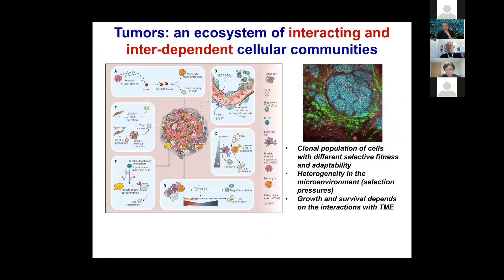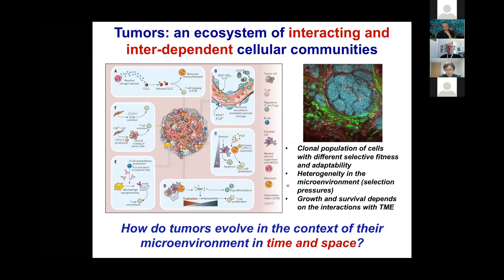We know — and this was touched upon by the previous two speakers — that the tumor is really an ecosystem of widely interacting and interdependent cellular communities. You have clonal populations of tumor cells with different selective fitnesses that can adapt differently, acted upon by a heterogeneous tumor microenvironment that can impose different selection pressures — immune cells, cancer-associated fibroblasts, endothelial cells, etc. The question we really wanted to address is: how do tumors evolve in the context of the microenvironment, both in time and space?